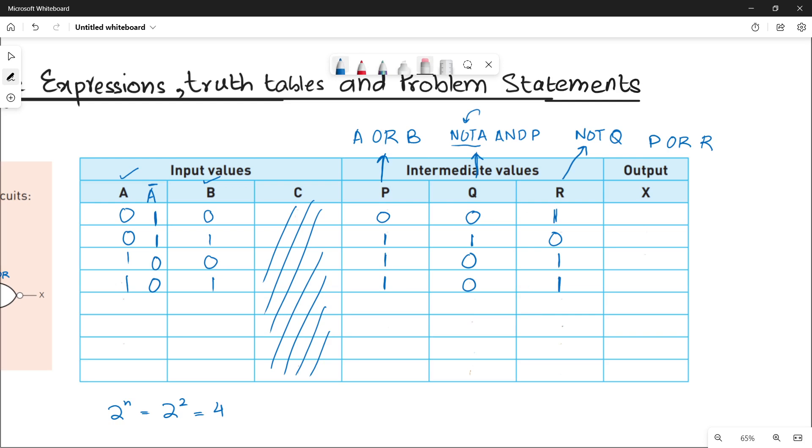Finally, what you have to do, you have to calculate X. X is nothing, but it is an OR operation between P and R. So the first one is 0 plus 1 becomes 1. 1 plus 0 becomes 1. 1 plus 1 becomes 1. 1 plus 1 becomes 1. This completes part B of activity 10.2. Stay tuned, stay connected and do not forget to subscribe the channel.